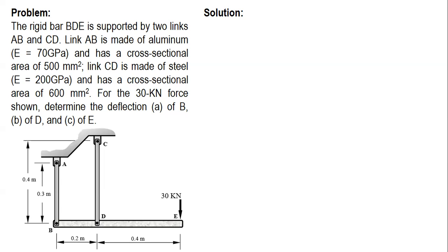Link CD is made of steel with E = 200 GPa and has a cross-sectional area of 600 mm².